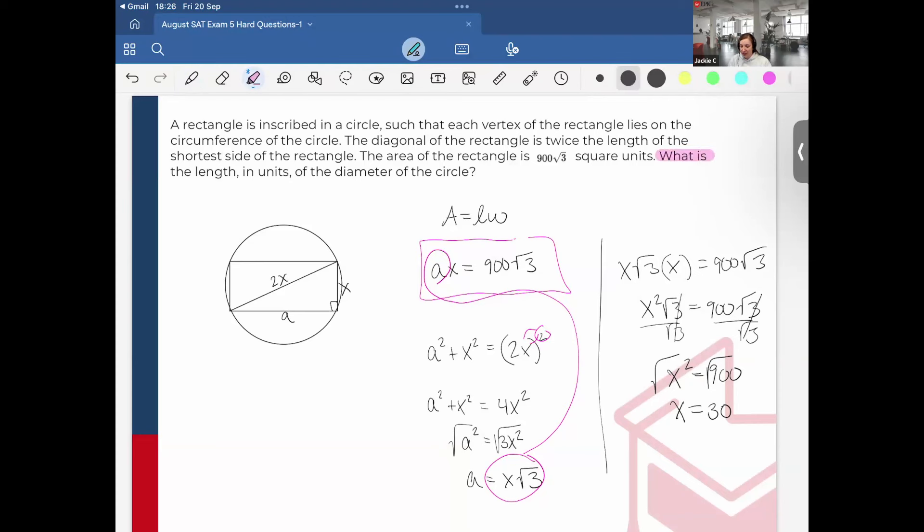Divide each side by root 3. I get that x squared equals 900. Final step take the square root, that will be x equals 30. Always go back and read the question. It says what is the length in units of the diameter of the circle. That would correlate to 2x, so final step would be 2 times 30 which is 60.